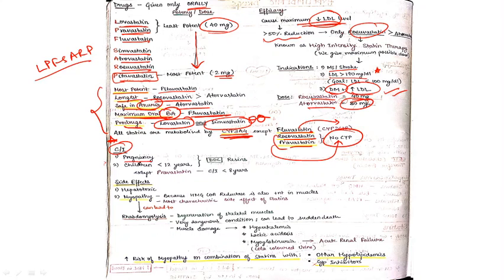These drugs are contraindicated in pregnancy and in children less than 12 years. The drug of choice for hypolipidemic treatment in pregnancy and children less than 12 years is resins, which are generally used in these two conditions.